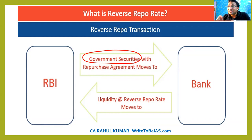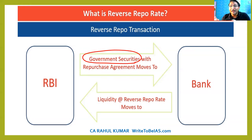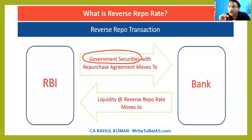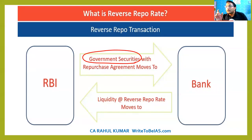So RBI is the banker of the bank — RBI is the bank of the bank. That is why repo rate will always be higher than the reverse repo rate. The difference between the repo and reverse repo rate is called the policy corridor.